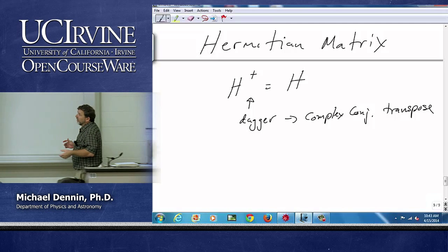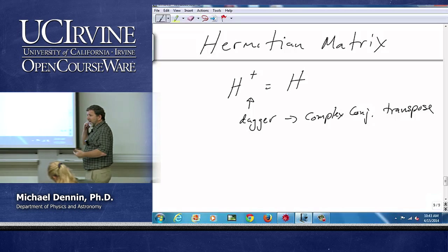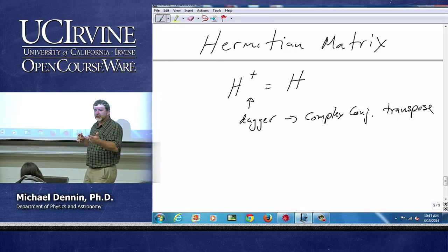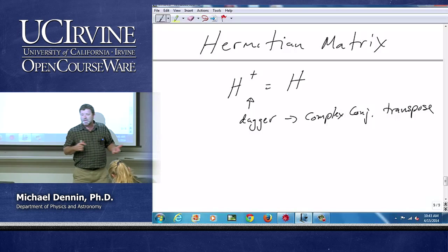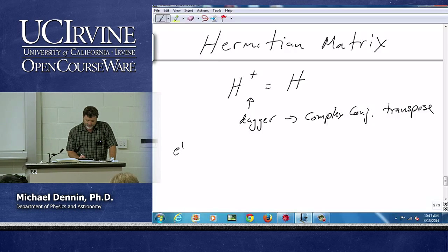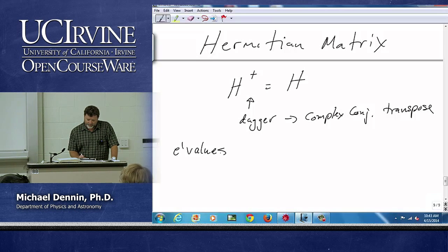And the idea here, it turns out that the eigenvalues of a Hermitian matrix are always real and the eigenvectors are always orthogonal. And this is central to quantum mechanics because the eigenvalues of operators